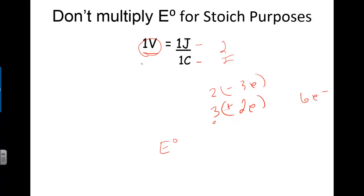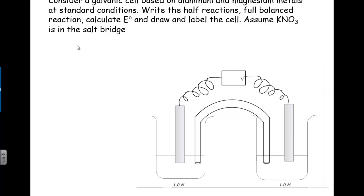We're going to start by considering a galvanic cell based on aluminum and magnesium metals at standard conditions. We want to write the half reactions, the full balanced reaction, calculate E-naught, and draw and label the cell. We'll assume potassium nitrate is in the salt bridge. I went ahead and drew a picture of a cell — I'd suggest you pause and do that yourself. Since aluminum and magnesium are involved, I'll start by writing the half reactions from the standard reduction potential chart.